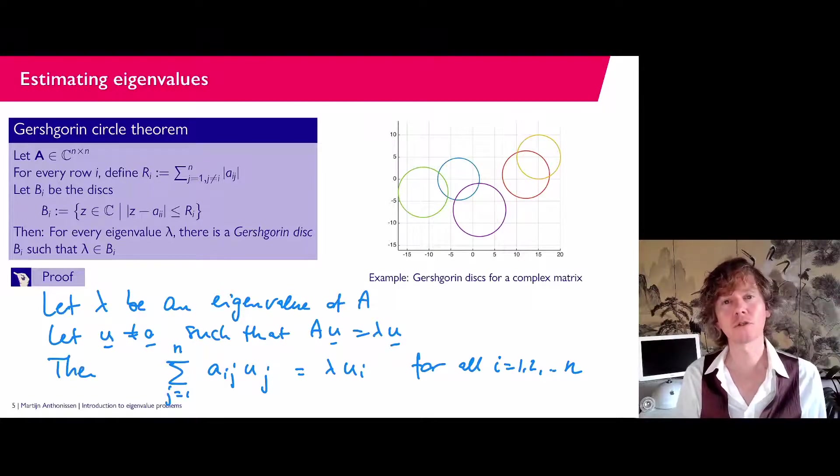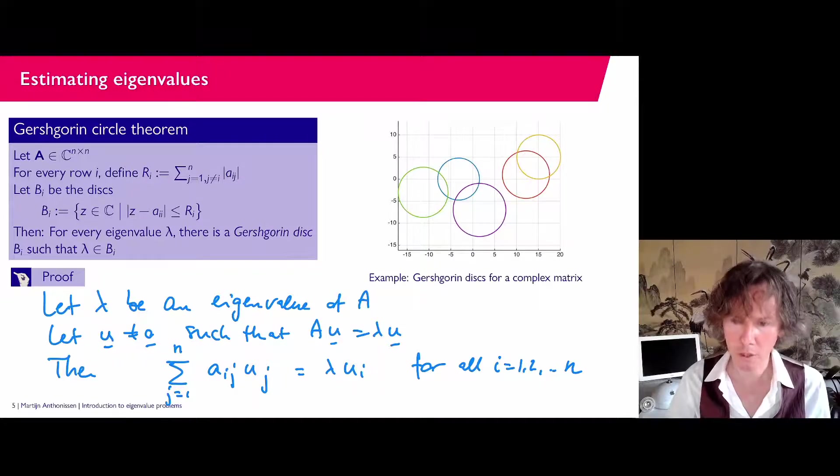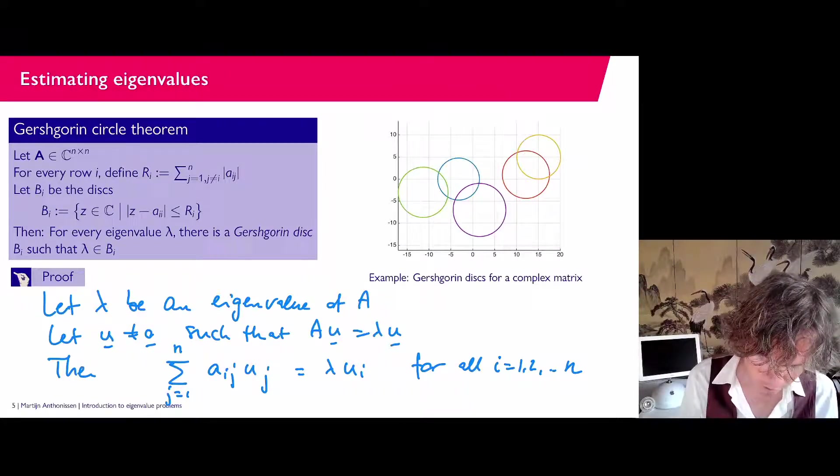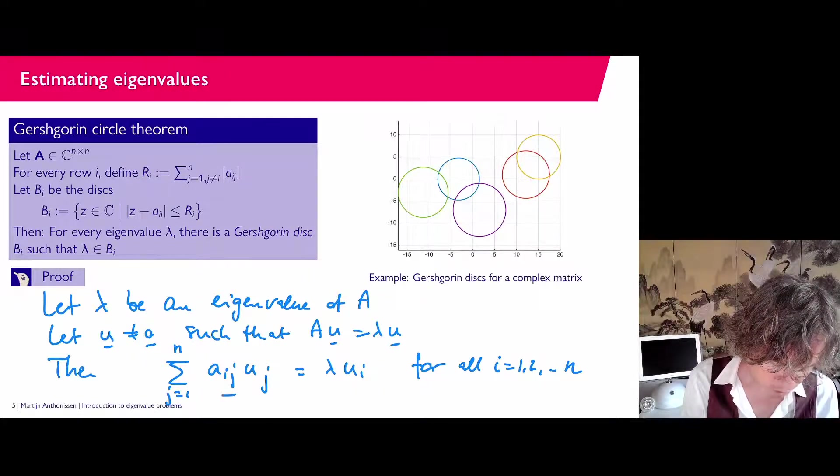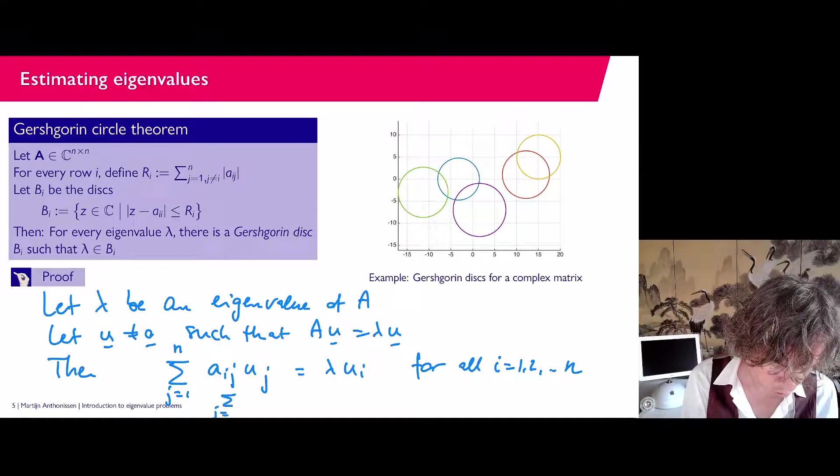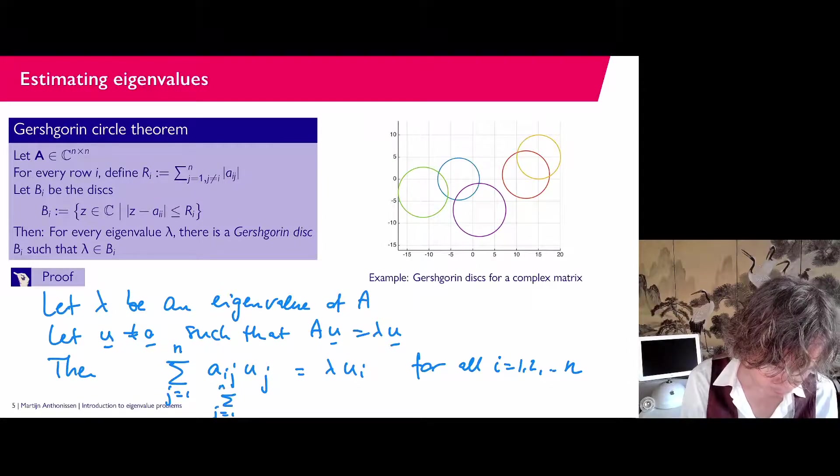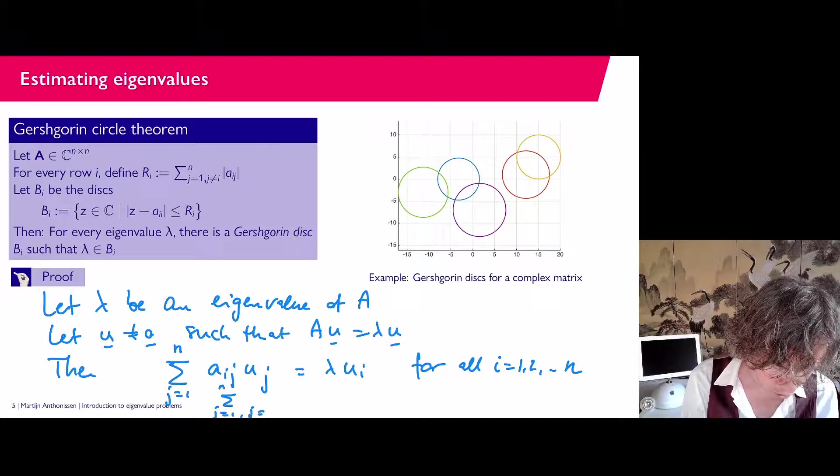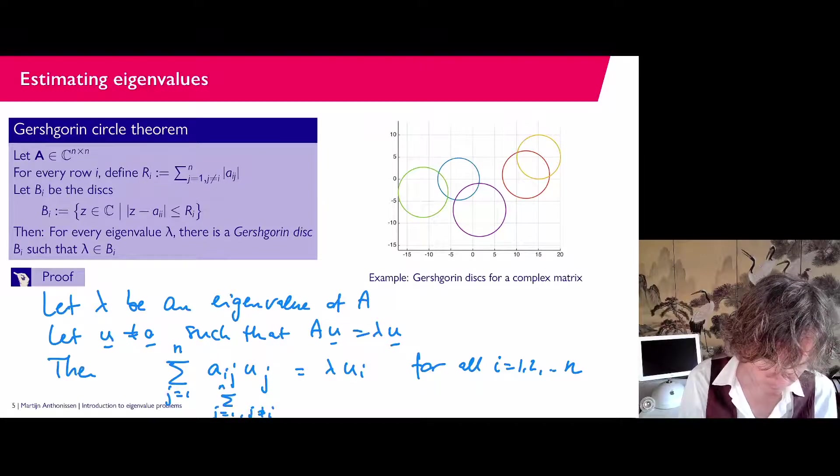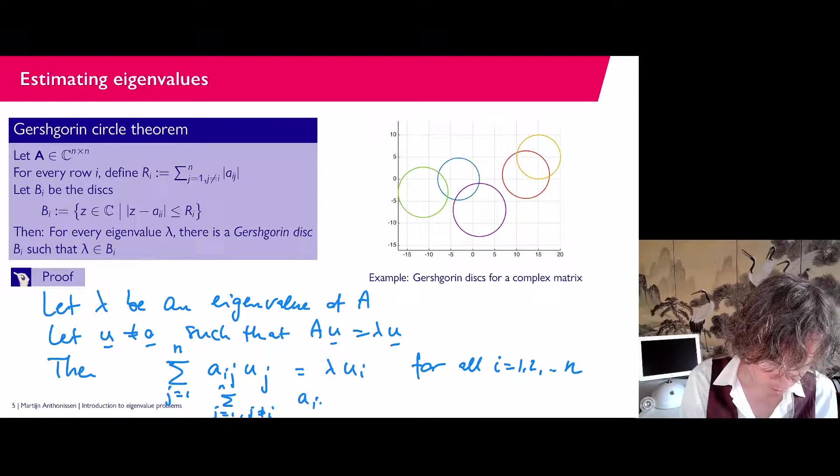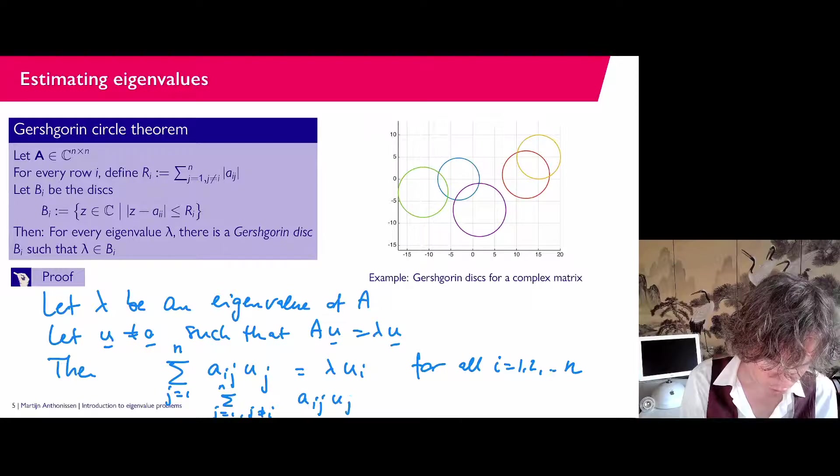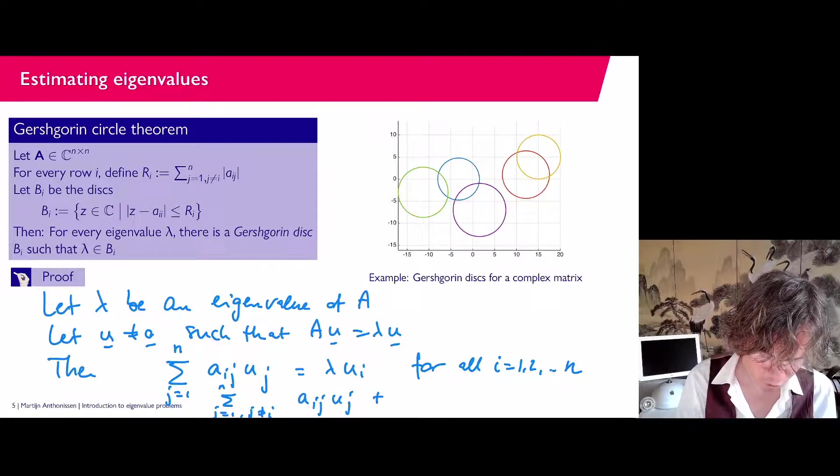So if I split off on the left, if I write a sum as the sum of the off-diagonal entries plus the diagonal entry. So let's do that. Then I can write the sum j is 1 up to n, and j should be unequal to i, A_ij U_j. Plus of course then the diagonal entry A_ii U_i.